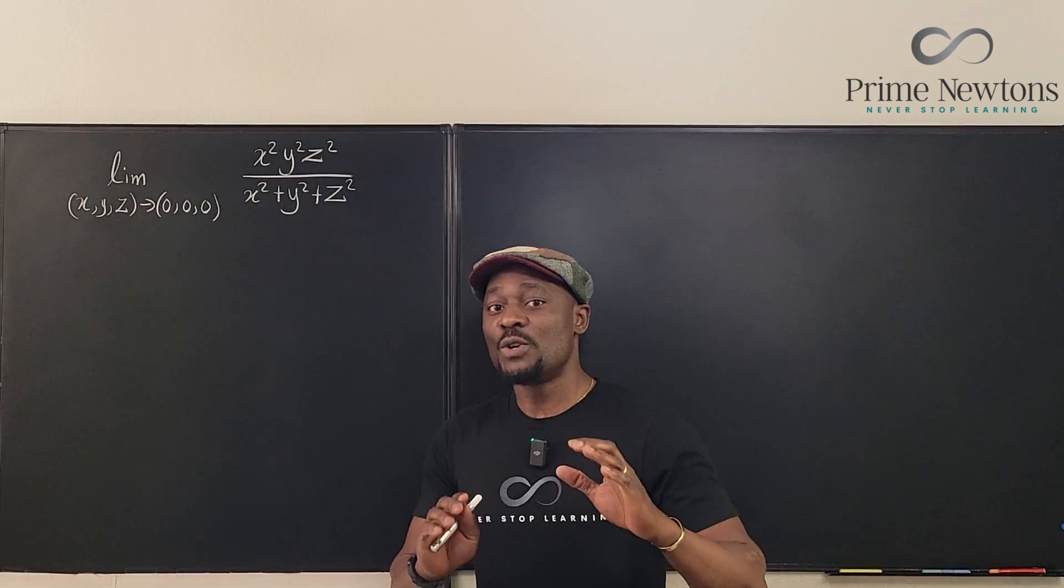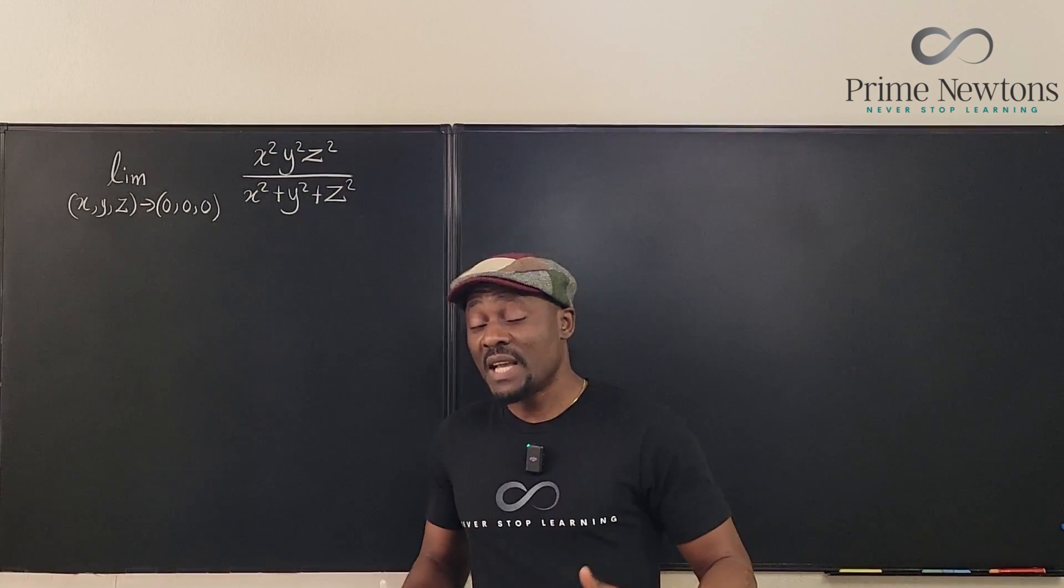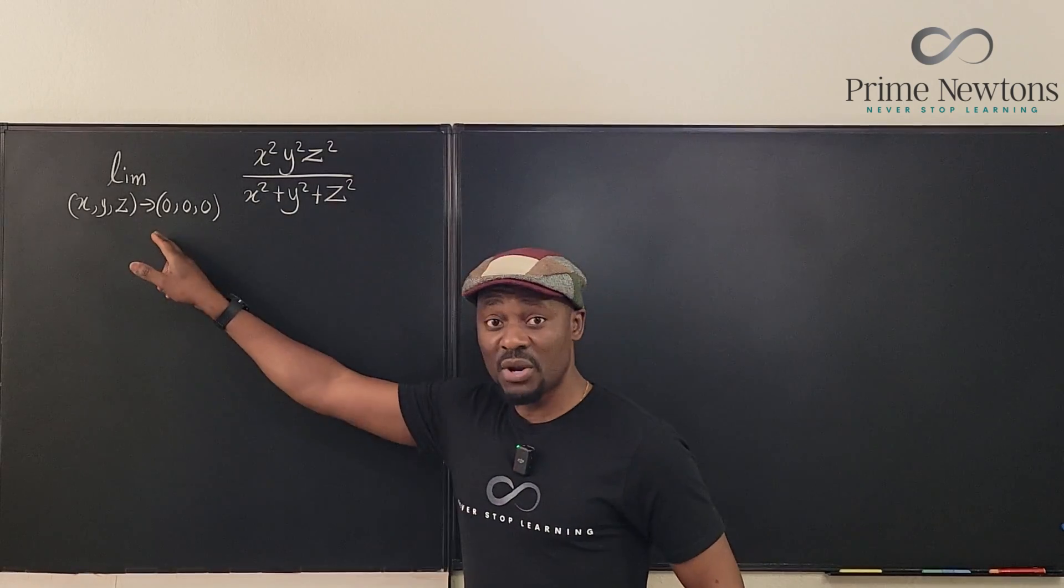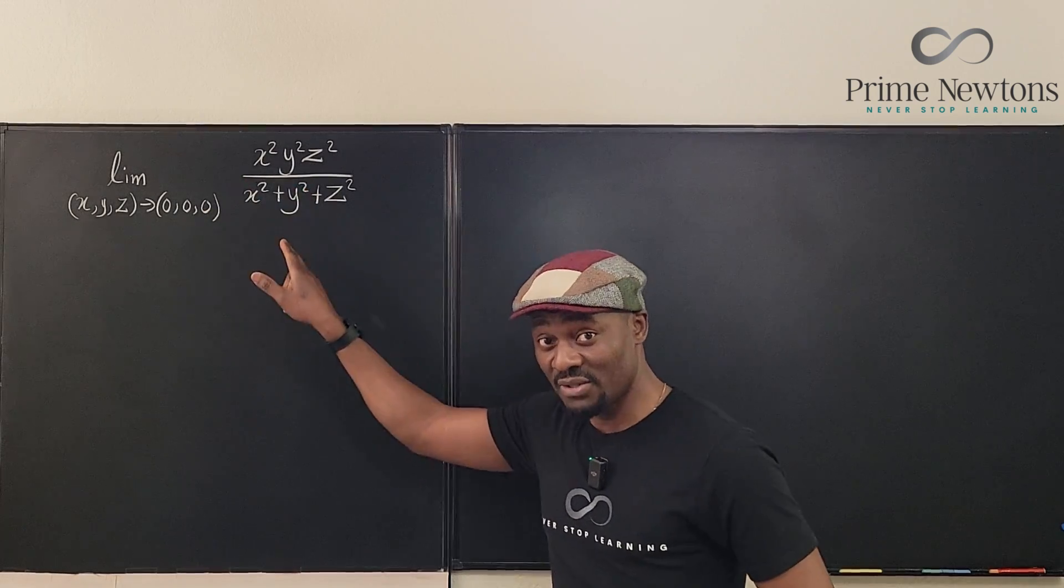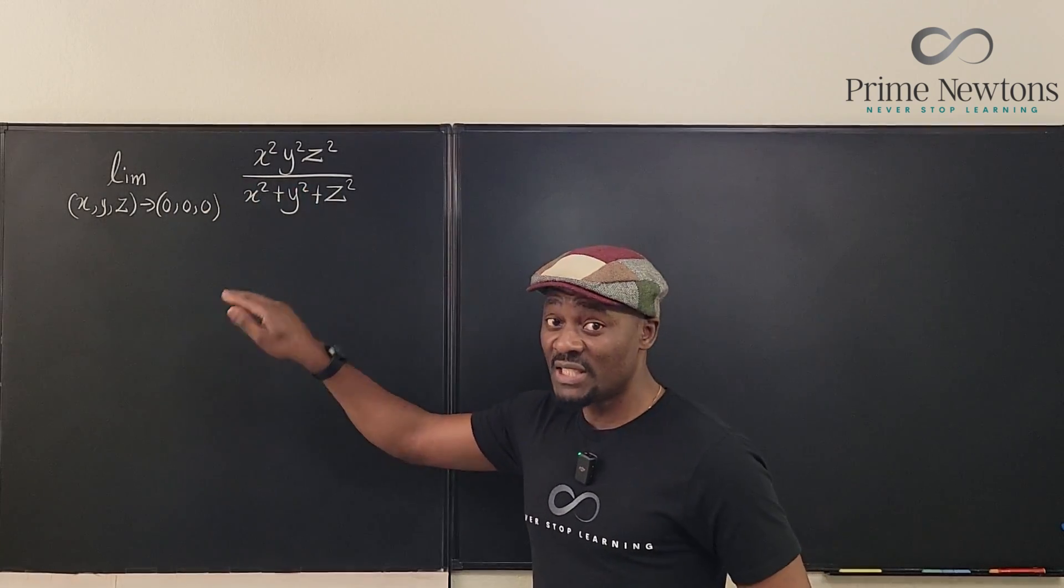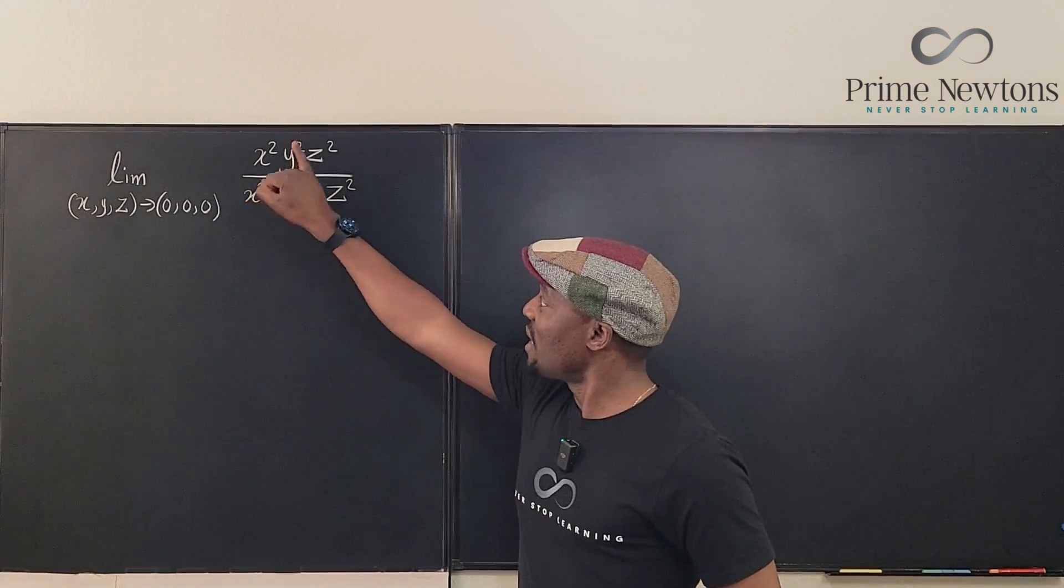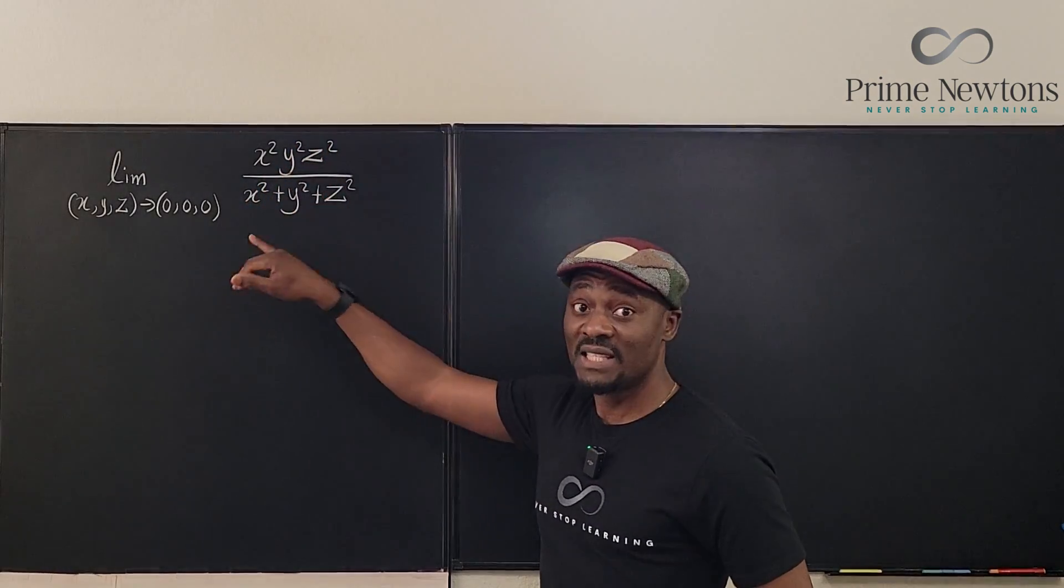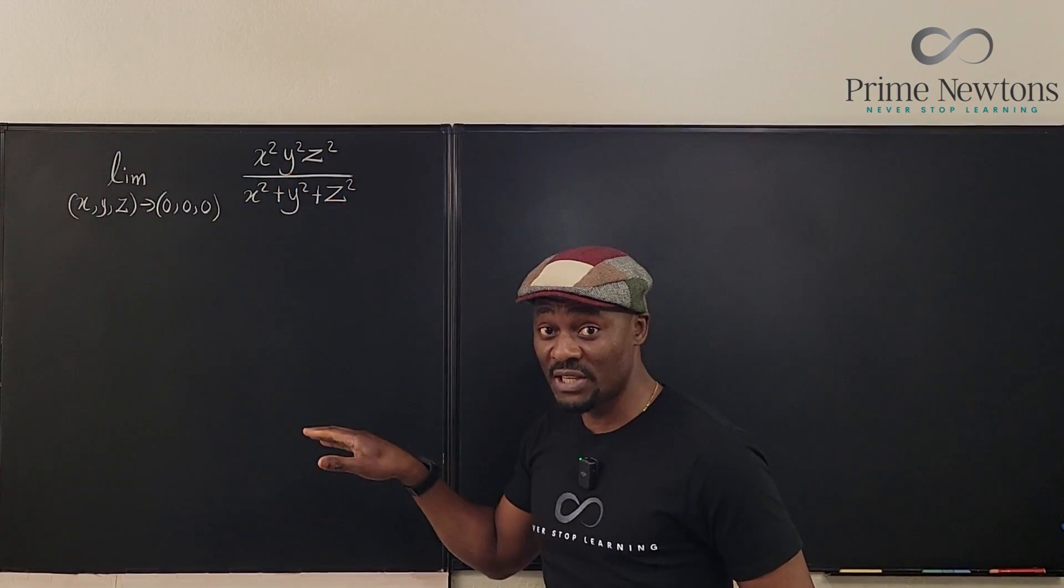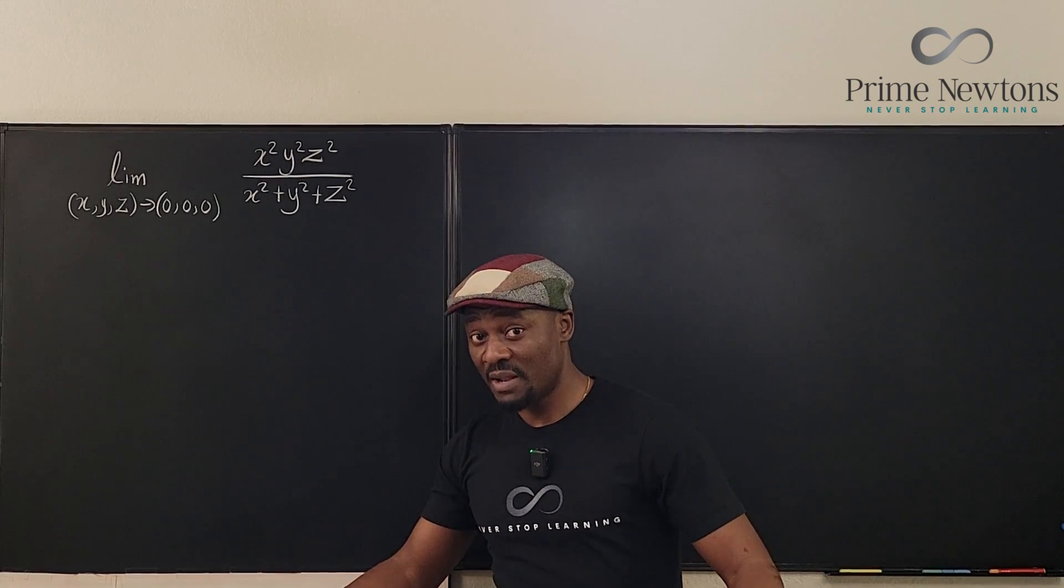Now what you're expected to do when you evaluate any limit is to directly plug in the values into the function. So if we plug in zero zero zero for x, y, z, we're going to get zero times zero times zero and here we're going to get zero in the bottom, so it's zero over zero indeterminate form.